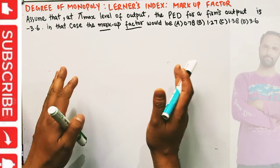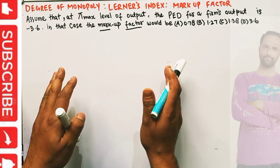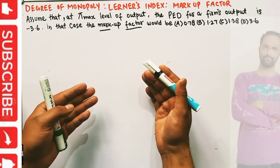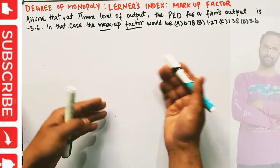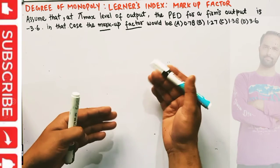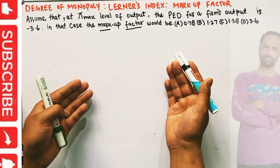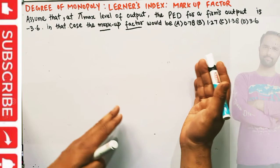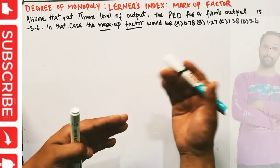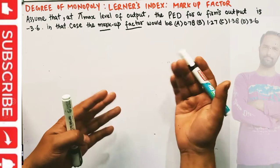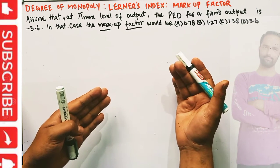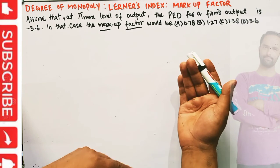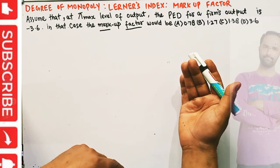To understand the markup factor, we first need to derive the Lerner's Index. The Lerner's Index shows us the percentage markup that a firm is able to charge above its marginal cost. Higher the value of the Lerner's Index, the more the firm is able to charge above its marginal cost, which means greater monopoly power.